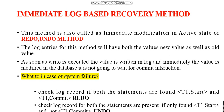The first method is immediate modification — also called the redo/undo method. The log entries for this method will have both values: new value as well as old value. As soon as a write is executed, the value is written in the log and immediately the value is modified in the database — it is not going to wait for the commit instruction. So in immediate log-based recovery, the log entry has both new value and old value, and any write operation immediately modifies the database.